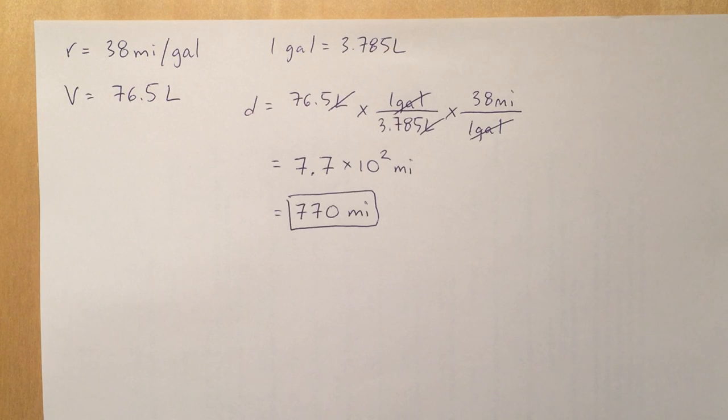Of course, you got to know that you need that conversion factor from liters to gallons, which I've given you there. One gallon is 3.785 liters.